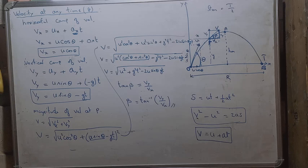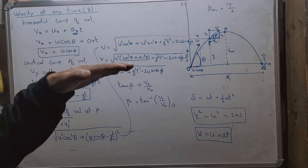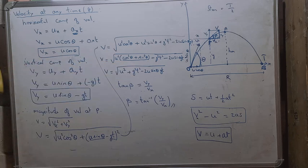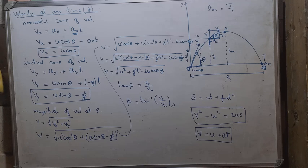This is all about projectile motion. We discussed two cases: when a projectile is given a horizontal projection, and when it is given an angular projection. Please study this topic carefully — in exams, questions often ask you to derive the time of flight, maximum height, horizontal range, time to reach maximum height, and the angle needed for maximum horizontal range. Practice the derivations especially.